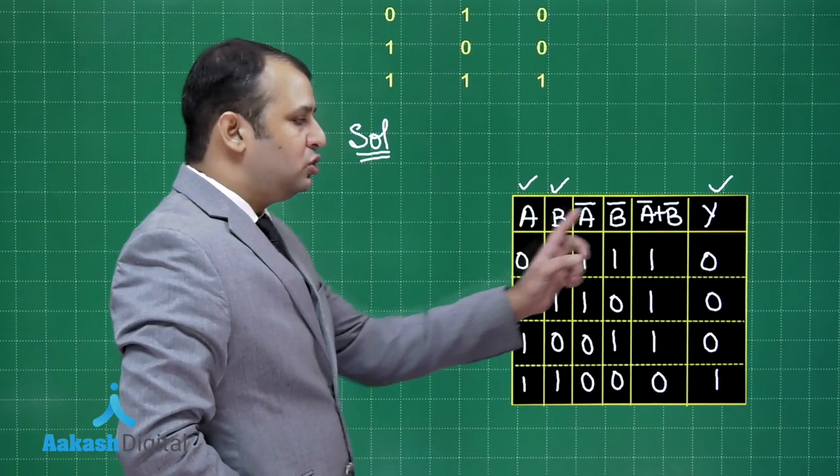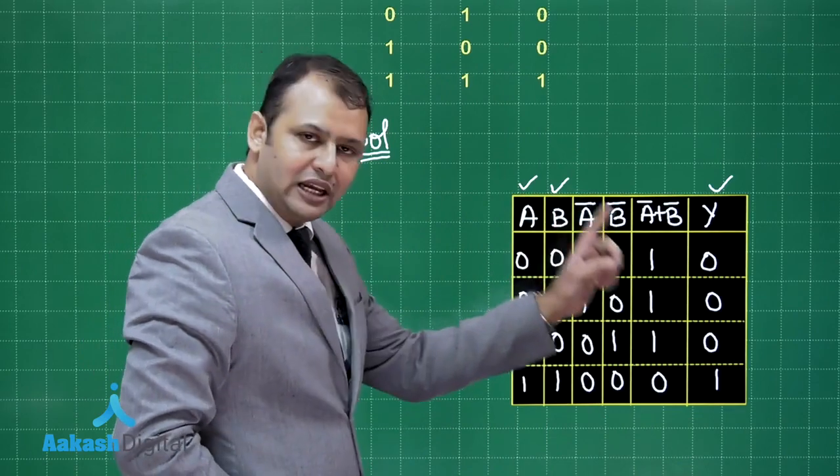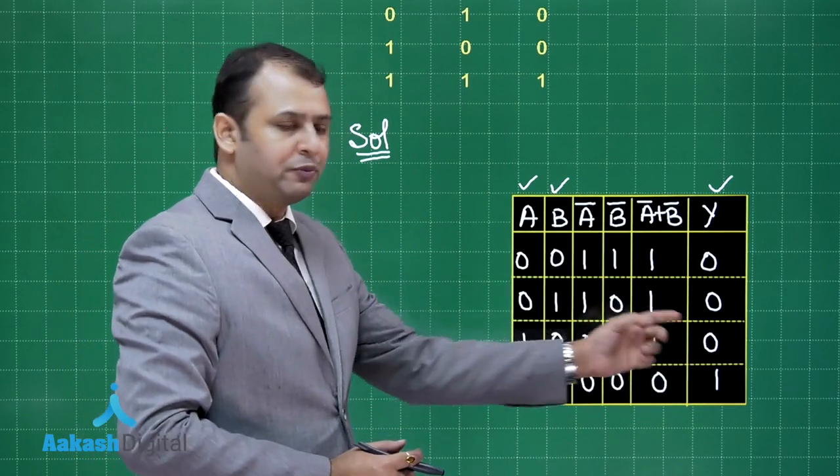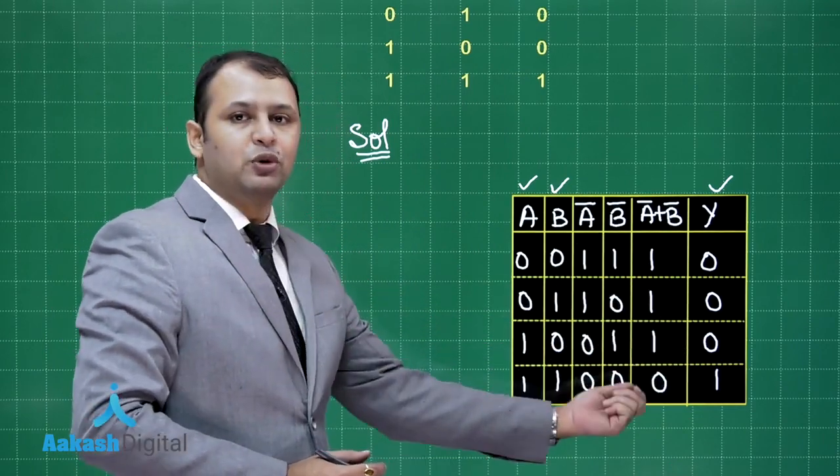So with the input of 0 and 0 you will get 0, 0, 1 you will again get 0, 1 and 0 again 0. That means whenever 0 is coming you will get a 0 output. But when both are 1, then the output would be 1.